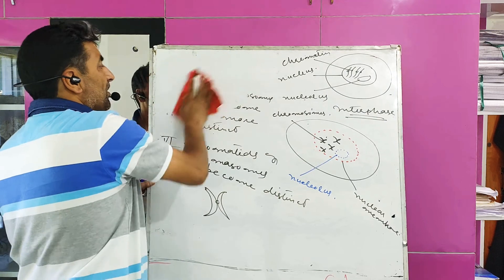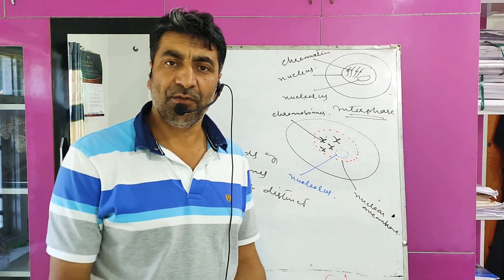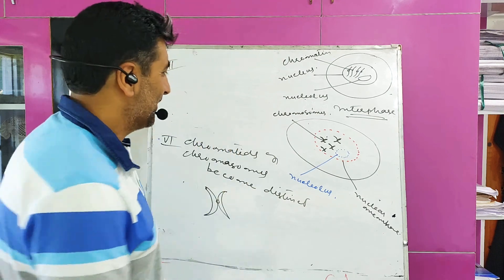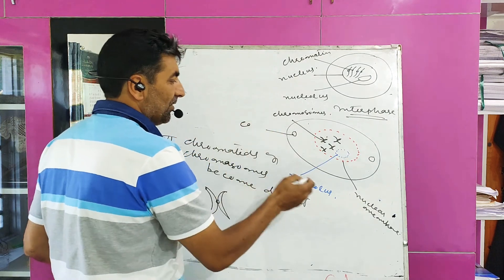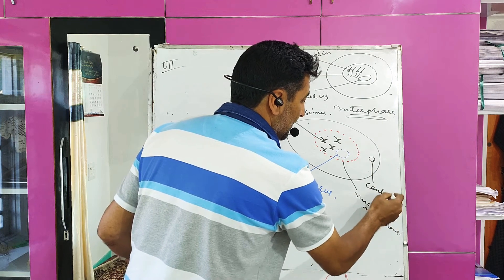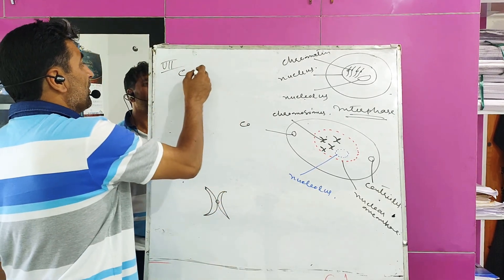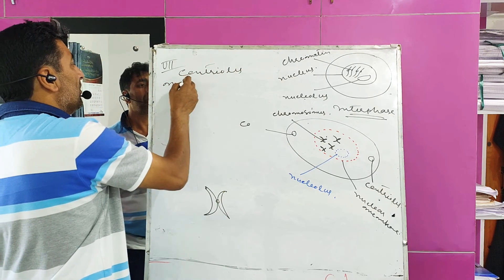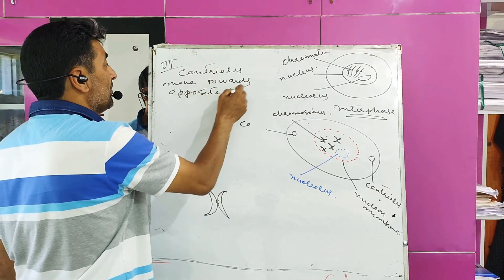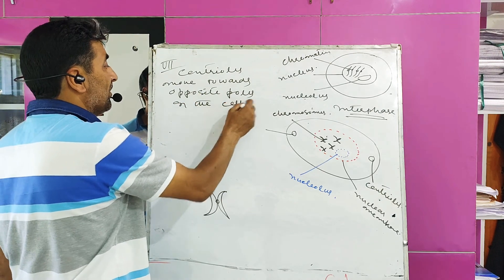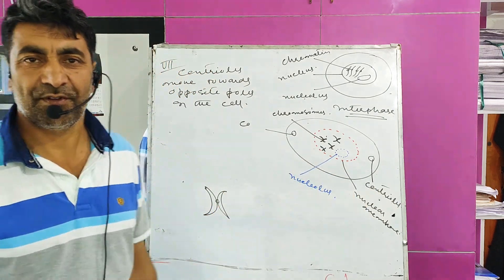Next change which occurs during prophase: centrioles move towards opposite poles of the cell. These are the centrioles — they move towards opposite poles of the cell. This is one pole and the other pole; the two centrioles move towards the opposite poles of the cell.